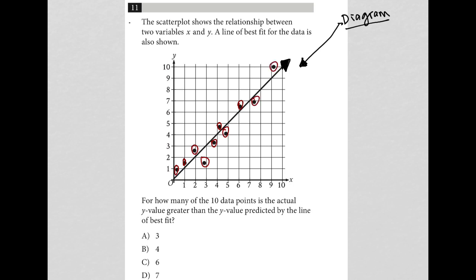So the question here says the scatter plot shows the relationship between two variables x and y. A line of best fit for the data is also shown. It goes on to say for how many of the 10 data points is the actual y value greater than the y value predicted by the line of best fit.